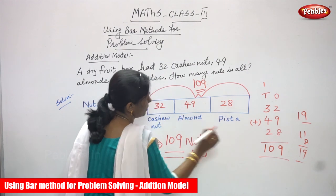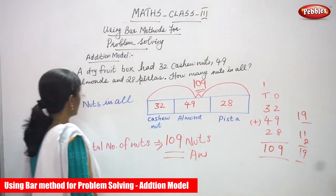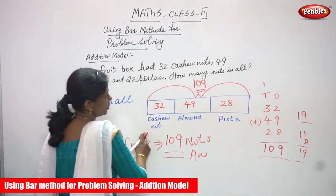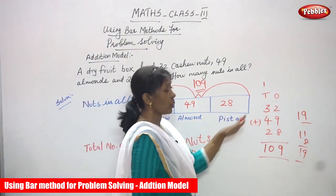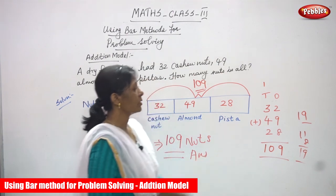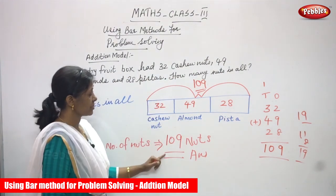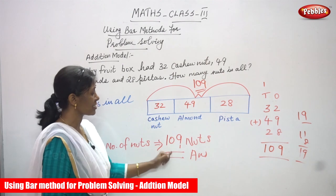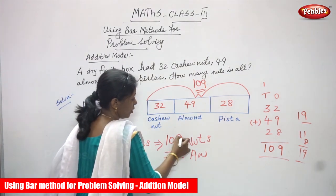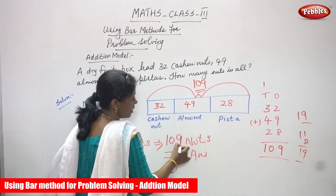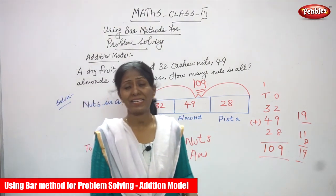So the answer for the question: cashew nuts 32, almonds 49, and pistas 28 — all together the total number of nuts is 109. We can call it 109 nuts. So the total number of nuts is 109 nuts.